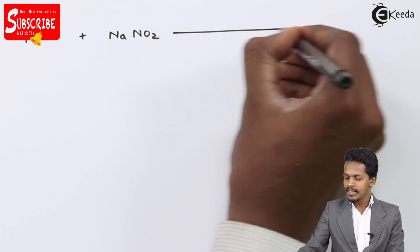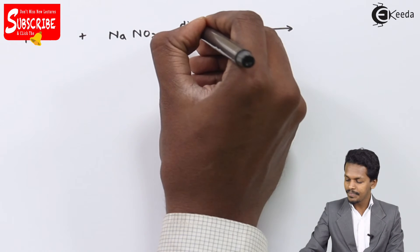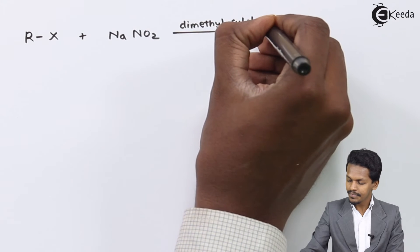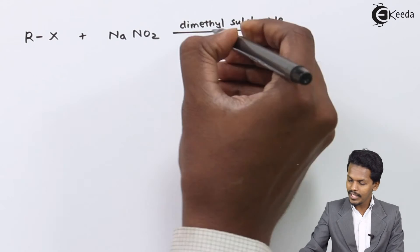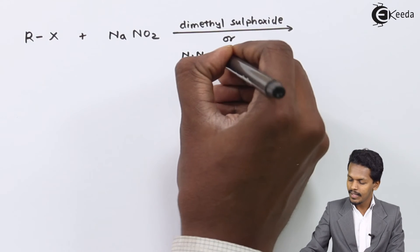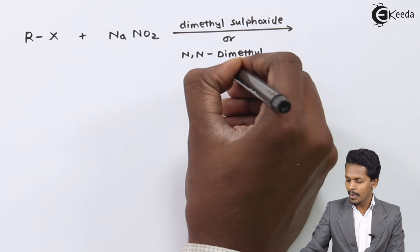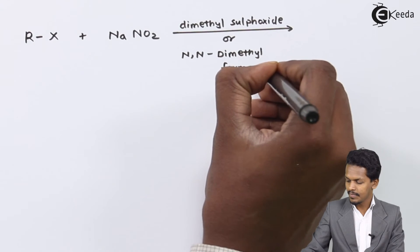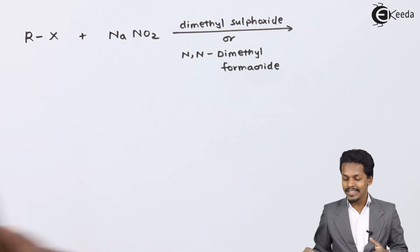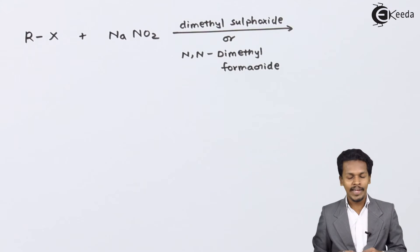For the NaNO2 reaction, the solvent required is dimethyl sulfoxide (DMSO) or alternatively N,N-dimethylformamide (DMF). Using these solvents, we can easily convert the alkyl halide into the corresponding nitroalkane.